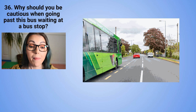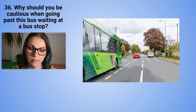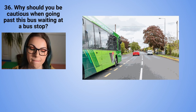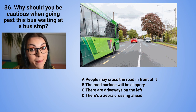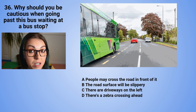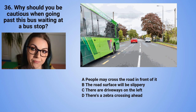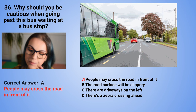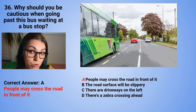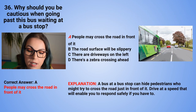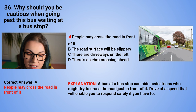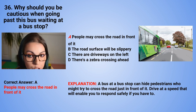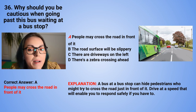Question 36: Why should you be cautious when going past a bus waiting at a bus stop? Please refer to the image on screen. A. People may cross the road in front of it. B. The road surface will be slippery. C. There are driveways on the left. Or D. There is a zebra crossing ahead. The correct answer is A — people may cross the road in front of it. A bus at a bus stop can hide pedestrians who might try to cross the road just in front of the bus. Drive at a speed that allows you to respond safely — for example, if you need to brake suddenly.